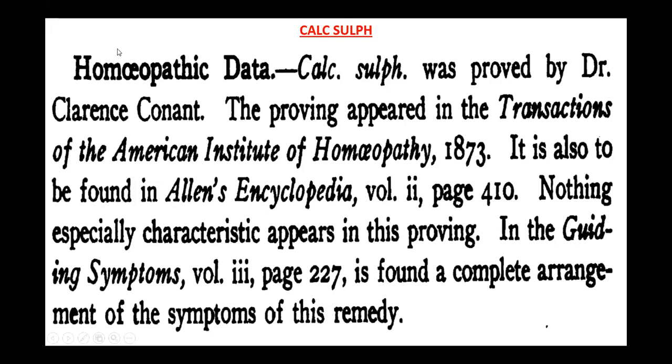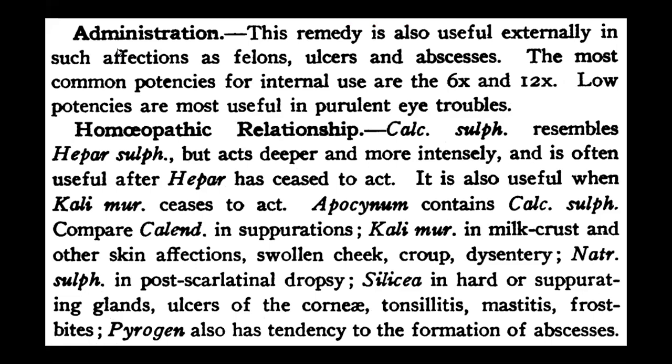Regarding administration: Calcarea sulph can also be administered locally, and is useful externally in affections such as felons, ulcers, and abscesses — skin conditions where the discharge is generally yellowish and associated with jaundice. The most common potencies for internal use are 6x and 12x. Low potencies are also useful in purulent eye troubles.